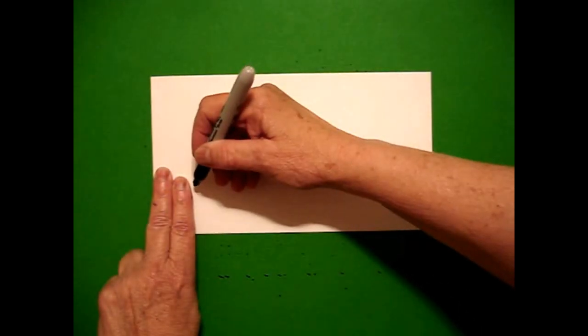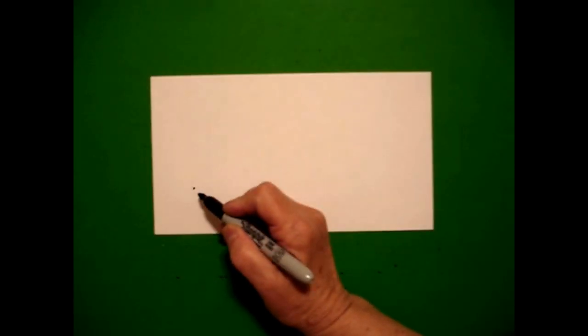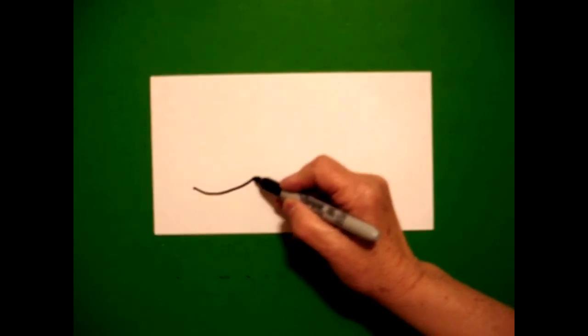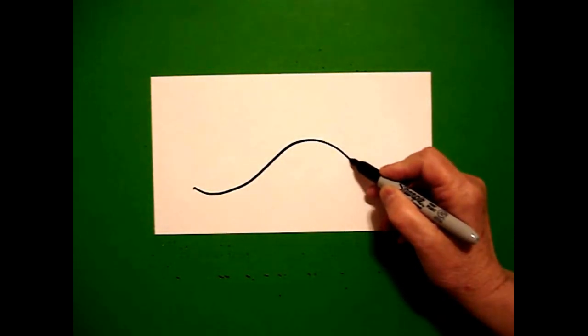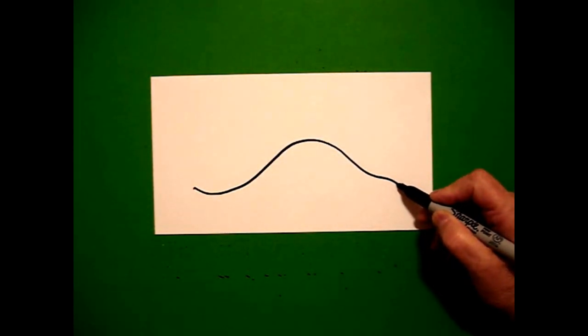I'm going to take two fingers on the left and put a dot. From that dot, I'm going to draw a curve line up, over and down to the right.